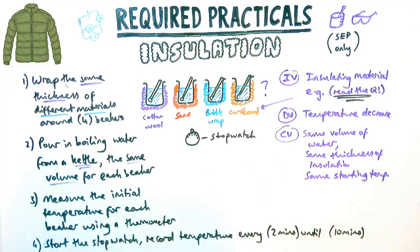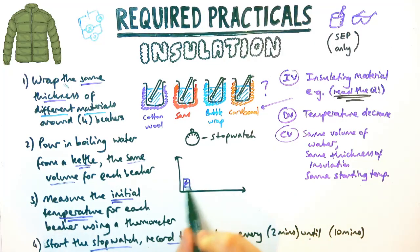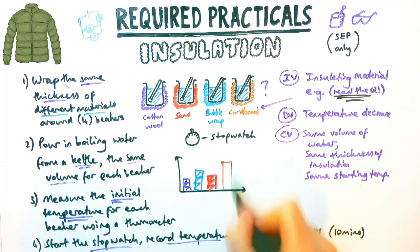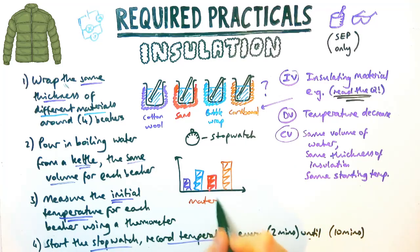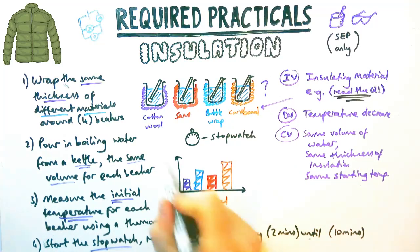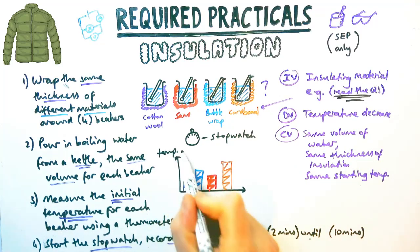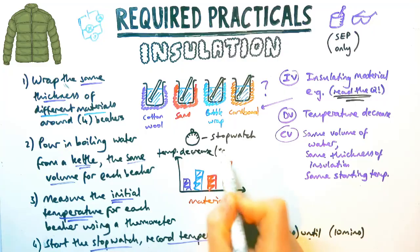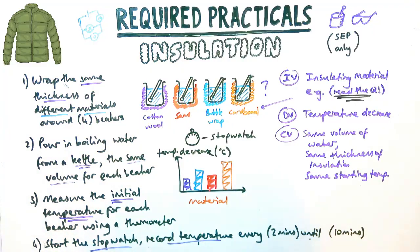To determine which material is the best insulator, you could be asked to plot a bar graph or be given one. On the bar graph, the four materials would be on the x-axis and the temperature decrease on the y-axis. The material with the highest temperature decrease is the worst insulator.